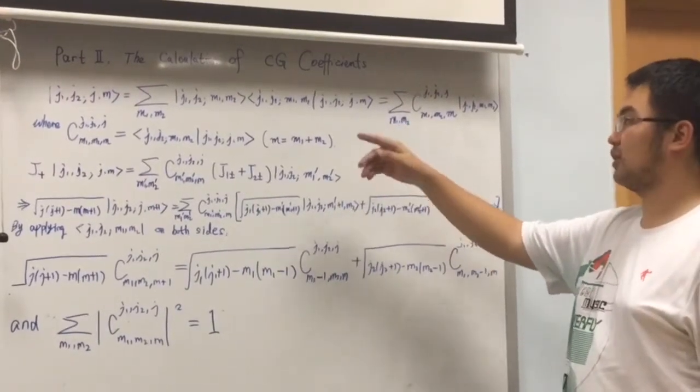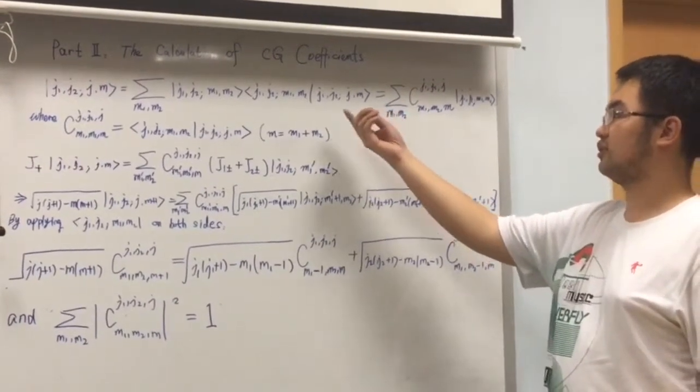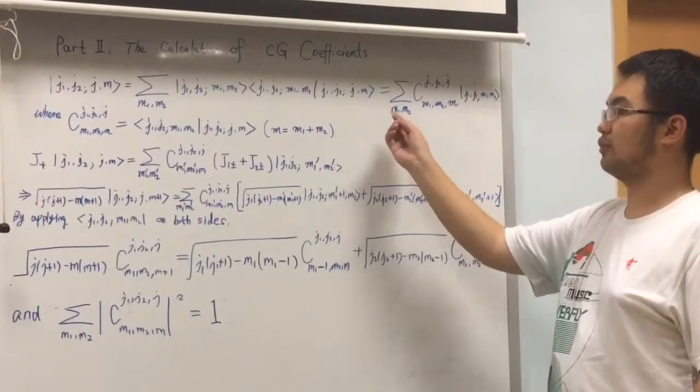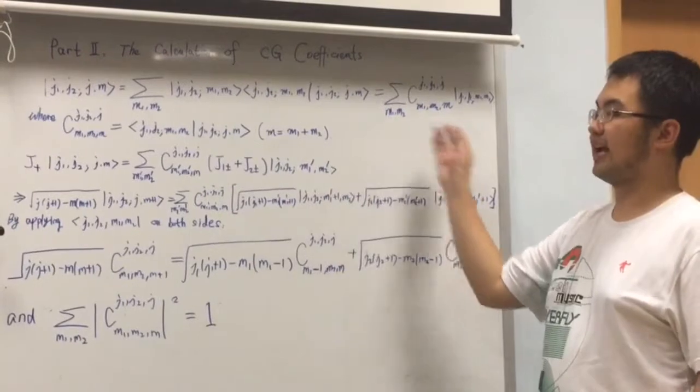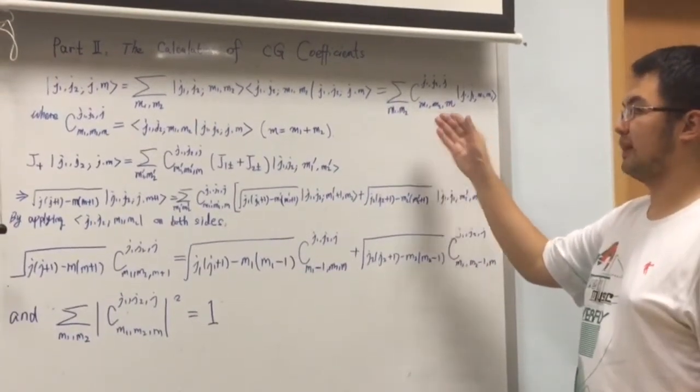...the J1, J2, M1, M2, to the new basis, the J1, J2, J, M, where we can get the CG coefficient by this form.